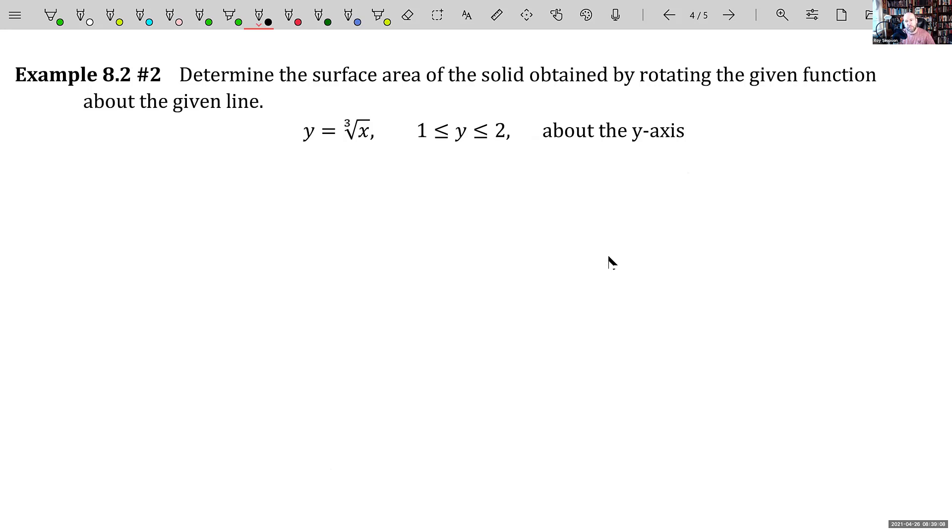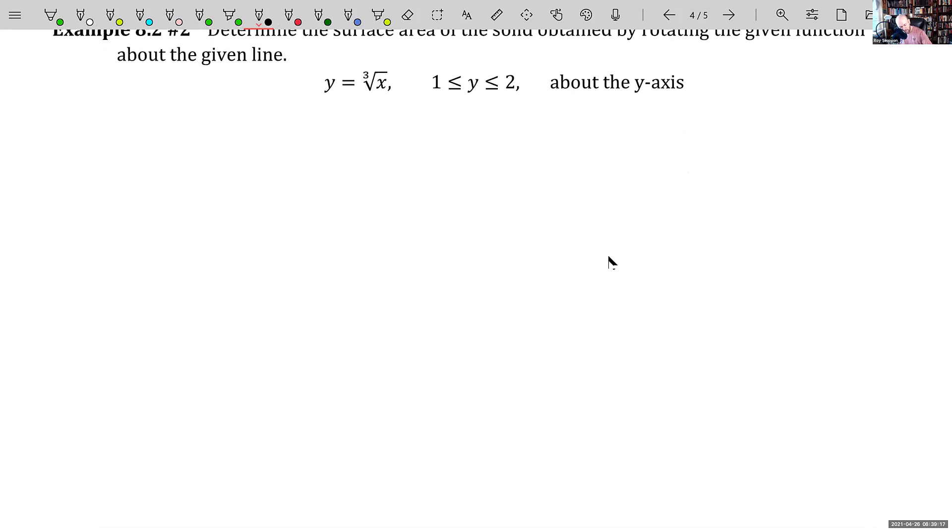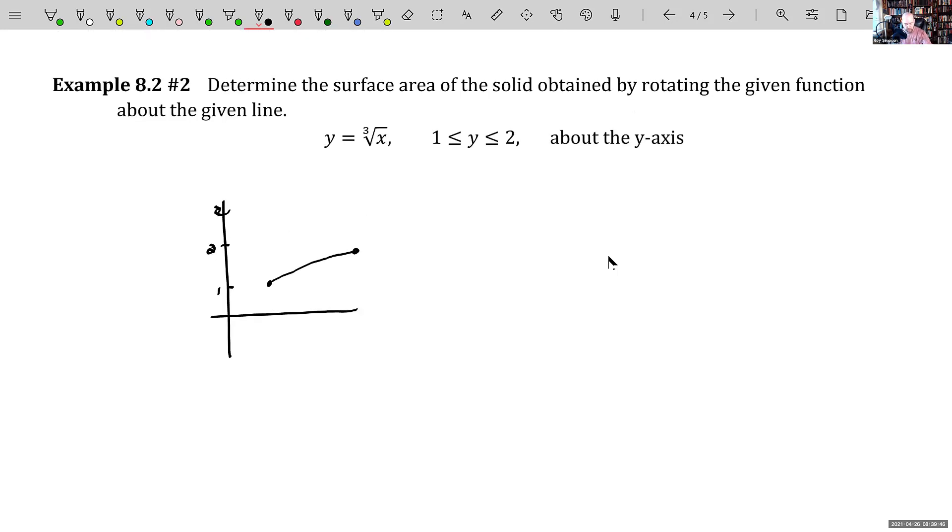So here's another one. Determine the surface area of the solid obtained by rotating the given function about the given line and we're rotating about the y axis here. A quick picture of this might help out. So cube root looks something like that. Y equals the cube root of X, but we're only rotating from y equals zero or one to two. So it might be like this and we're rotating it about the y axis from y equals one to y equals two. Now I'm not finding the volume. I'm just finding the surface area. Again, determine surface area. Okay.